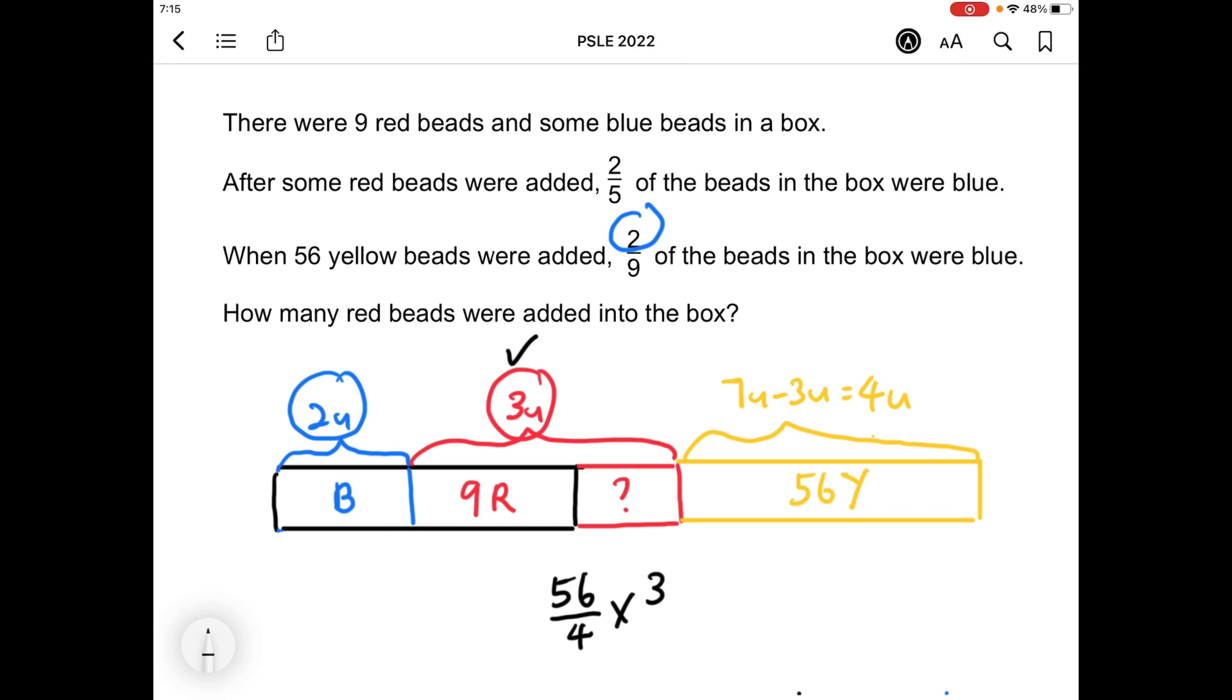But the question is asking about how many red bits were added into the box. So we're going to subtract 9 red bits that were in the box at first, and we should get 33 if you use a calculator to work it out.